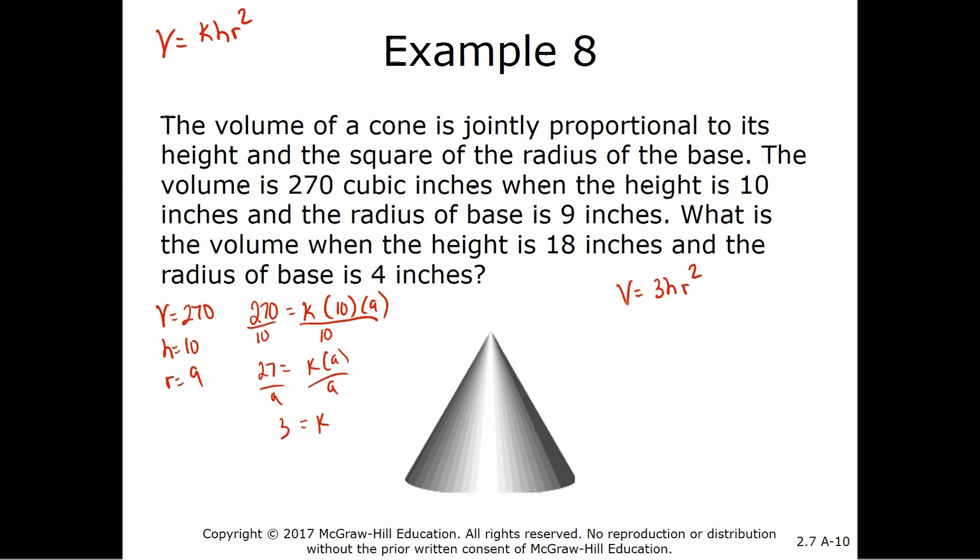Well, what is the volume when h equals 18 and r equals 4? So it's going to be v equals 3 times 18 times r squared. So 4 squared or 3 times 18 times 16. We get out our calculator. 3 times 18 times 16 equals 864 cubic inches.